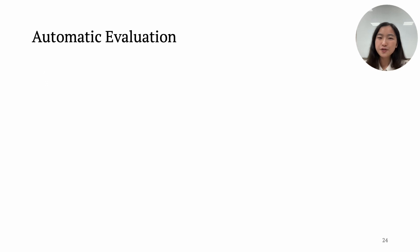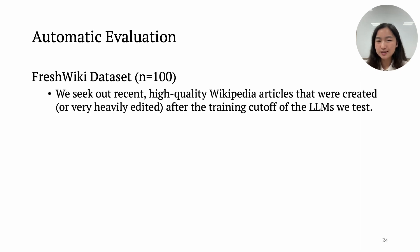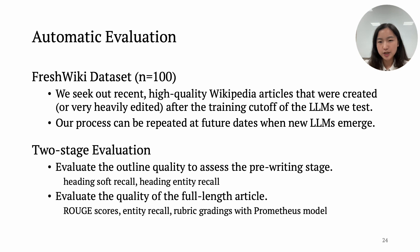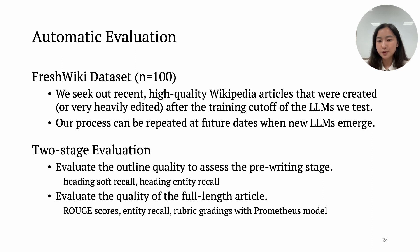For our evaluation, we curate the FreshWiki dataset by seeking out recent high-quality Wikipedia articles. Our process can be repeated at future dates when new language models emerge. With this dataset, we conduct two-stage automatic evaluation. We evaluate outline quality using our proposed metrics. For the final article evaluation, we use ROUGE scores and entity recall to compare generated articles with human-written ones. We also use the Prometheus model to provide grades on a list of rubrics.